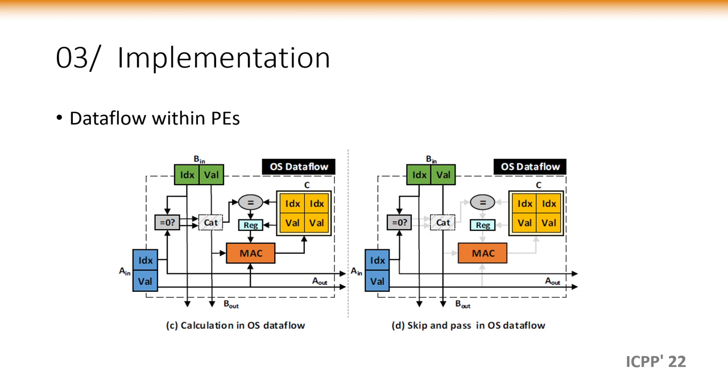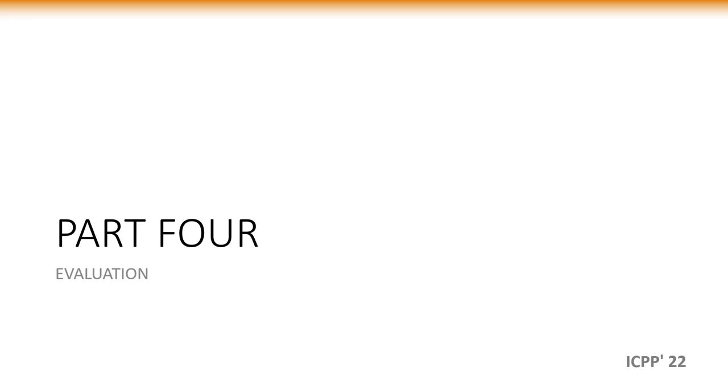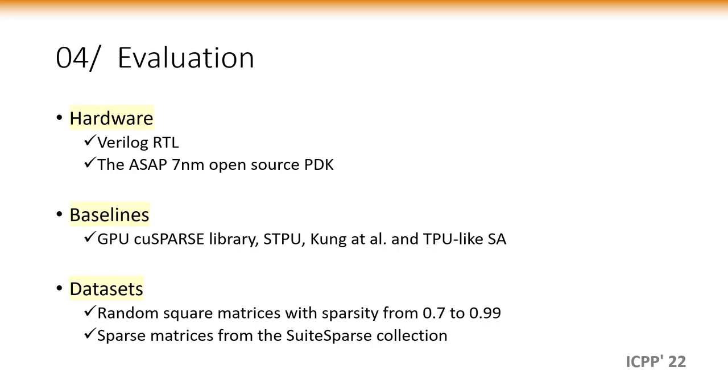In part 4, we evaluate the MESA from two aspects. We implement the MESA in Verilog RTL and then use a compiler to estimate the chip area and total power under open-source PDK. We conduct comparison on GPU using the cuSPARSE library, STPU using the work of Kung et al. and TPU-like systolic arrays with the same amount of PEs. And we use two datasets to test: randomly generated square matrices and the real-world sparse matrices from the SuiteSparse collection.